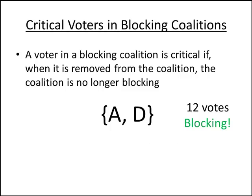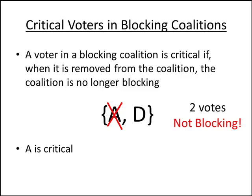Let's consider another blocking coalition with 12 votes — just enough to block. If we remove A, we only have 2 votes remaining, so it's no longer a blocking coalition, meaning A is a critical voter to this blocking coalition. If we remove D, we only have 10 votes remaining, which is also not enough to block, so D is also a critical voter to this blocking coalition.